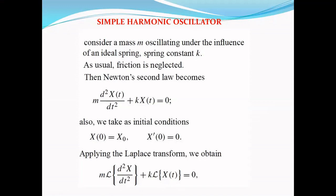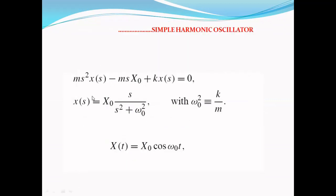Now we apply Laplace transform to this equation, then apply the inverse Laplace transform to obtain the solution. Applying Laplace transform we obtain m·L{d²x/dt²} + k·L{x(t)} = 0. Therefore we obtain X(s) = x₀ · s / (s² + ω₀²), where ω₀² = k/m. Then applying inverse Laplace transform, since L⁻¹{s/(s² + ω₀²)} = cos(ω₀t), the final solution is x(t) = x₀ cos(ω₀t).